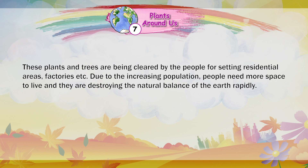These plants and trees are being cleared by people for setting up residential areas, factories, etc. Due to the increasing population, people need more space to live and they are destroying the natural balance of the earth rapidly.